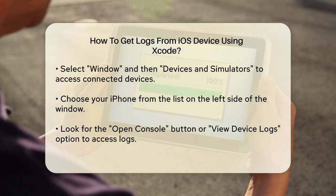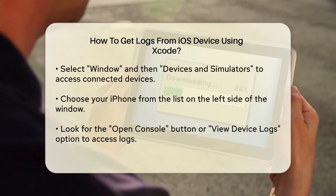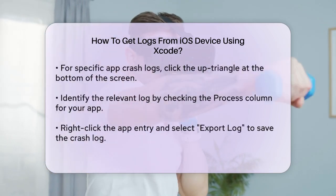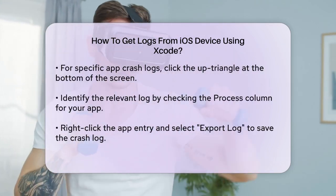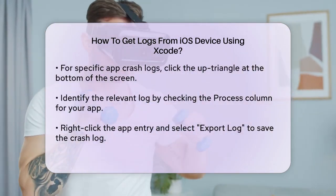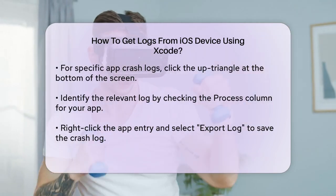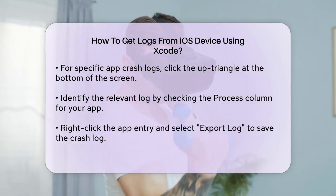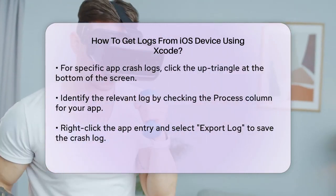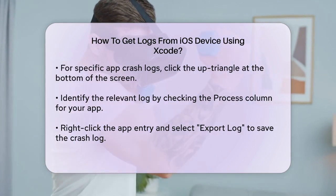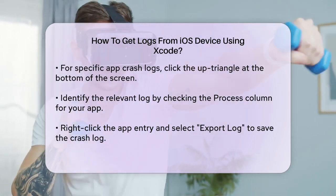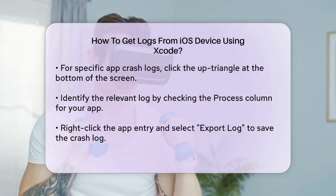Identify the log related to your app by looking at the Process column and selecting your app. Once you've clicked on the relevant entry, select Export Log to save the crash log to your computer. You can also rename the file if needed and share it via email or any other method.